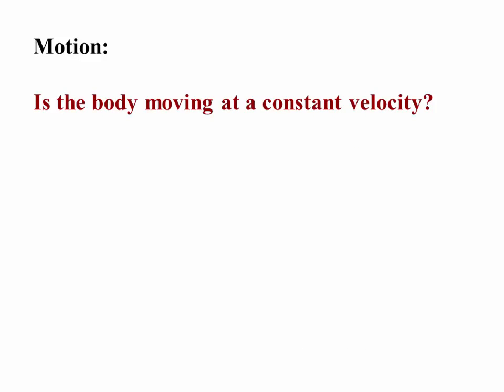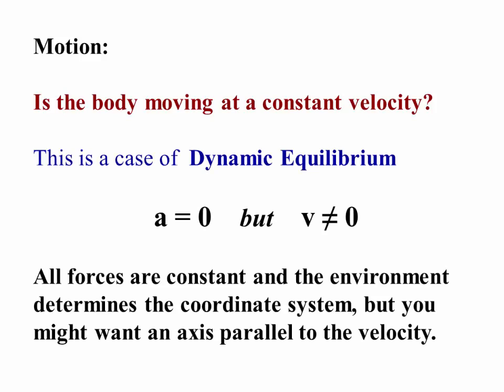Is the body moving at a constant velocity? If the velocity is constant, it's dynamic equilibrium. The acceleration is zero, although the velocity is not. That tells you again that all of the forces are constant and that we will use the environment to determine the coordinate system, although usually the environment might give us an axis that's parallel to the velocity. You want to be paying attention to the velocity and direction of the velocity in this case.